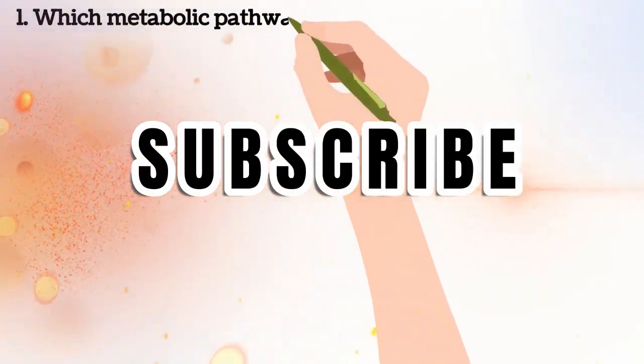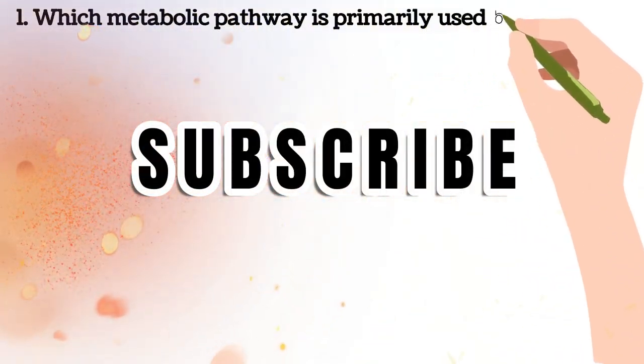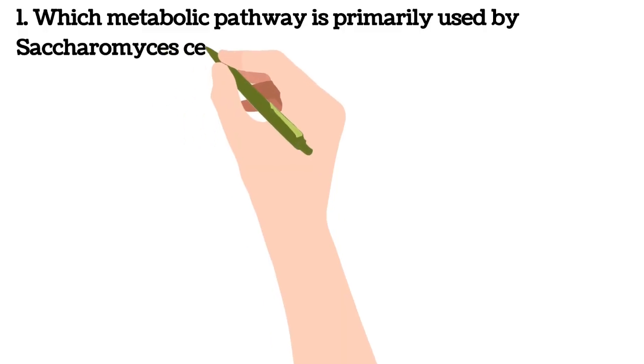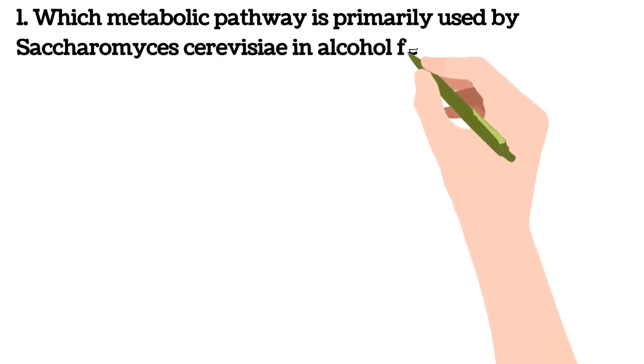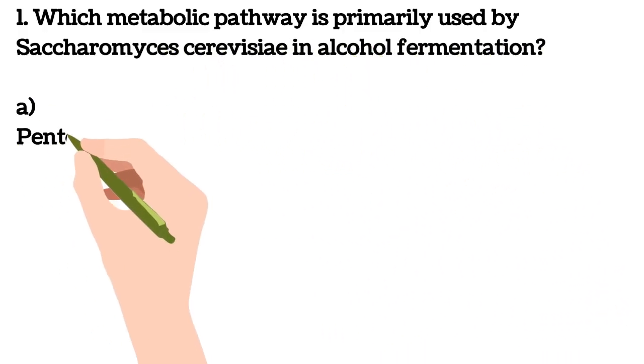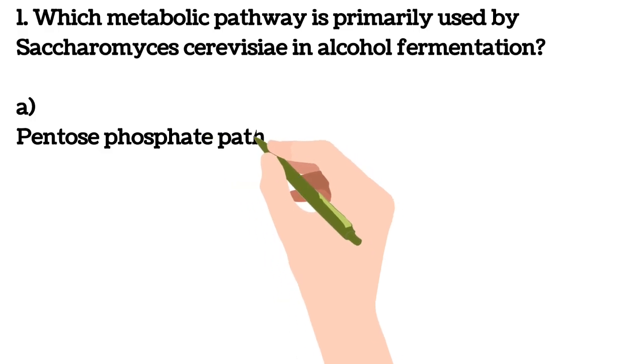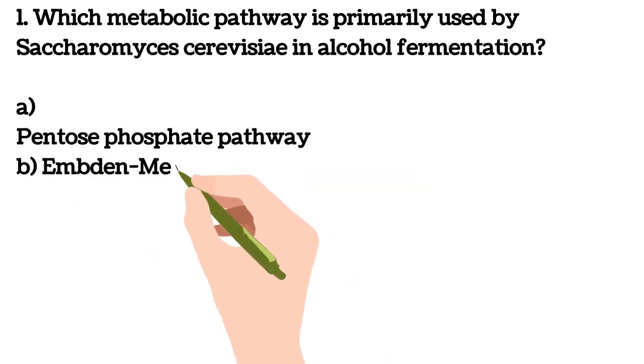Welcome to Biology Tutor. If you like this channel, please share and subscribe. Don't forget to click the bell button to get notifications. First question: which metabolic pathway is primarily used by Saccharomyces cerevisiae in alcohol fermentation? A) Pentose phosphate pathway, B) Embden-Meyerhof pathway, C) Entner-Doudoroff pathway, D) Glyoxylate cycle.